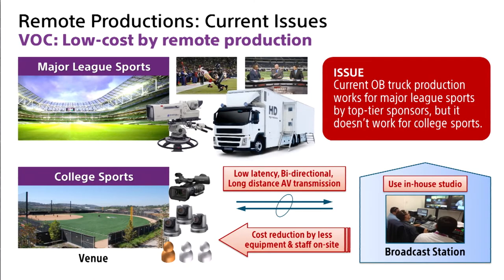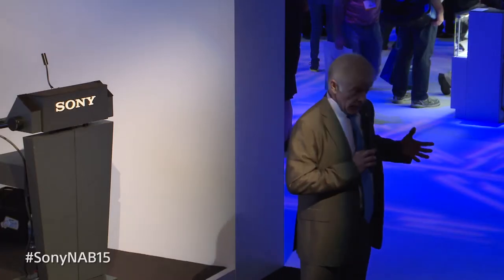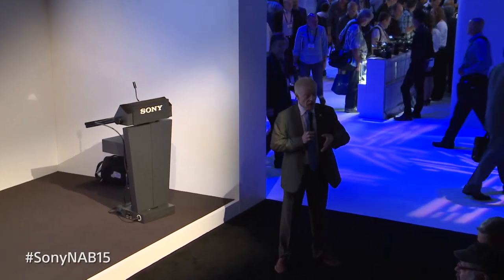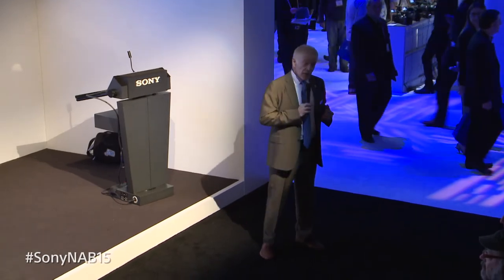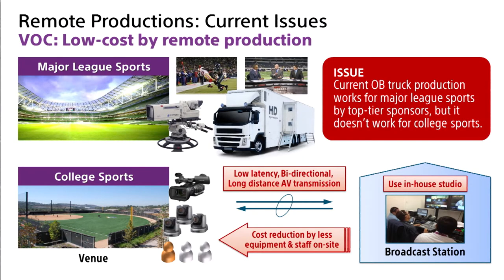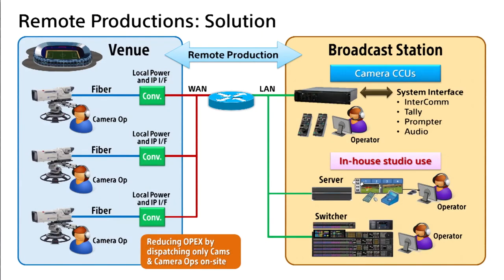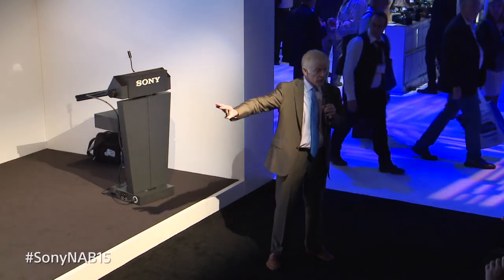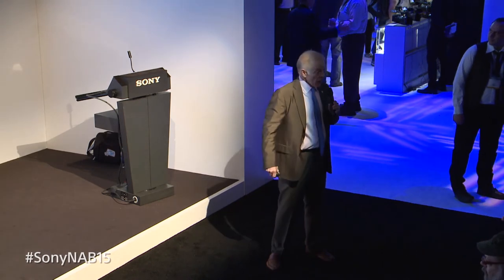Outside broadcasting trucks are very expensive — sometimes with 18 or 16 cameras, multi-million dollar vehicles typically deployed only for large sporting events like the World Cup or international tennis. It's very difficult to use them for small college operations. But with IP, we can deploy a minimum amount of equipment in the field and leave all broadcast signal processing back at the station, significantly reducing production costs.